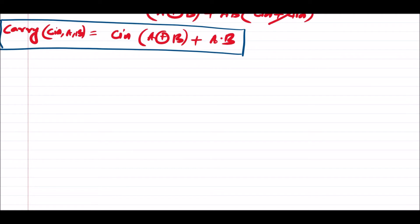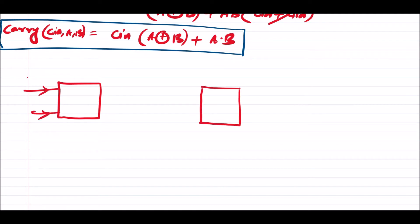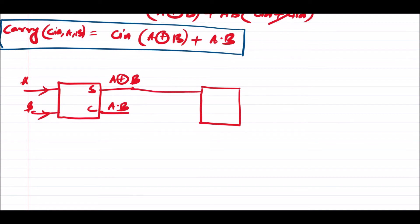Let us draw the two half adders. This is the first half adder and this is the second half adder. The inputs of the first half adder are A and B, and the outputs are sum and carry — where sum equals A XOR B and carry equals A·B. The sum output is then provided as an input to the second half adder, along with a third input Cin.